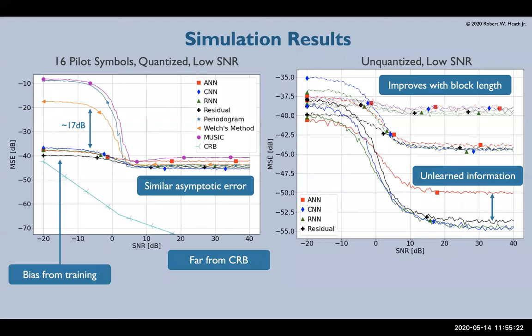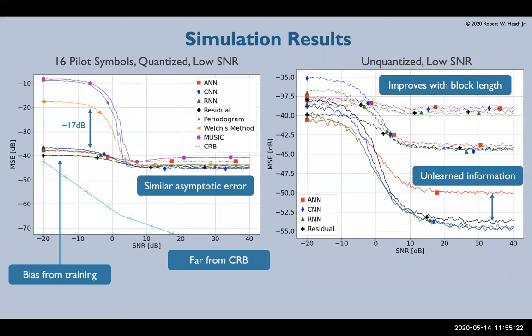Looking at estimation performance, we have two plots here. On the left, we have the results for training with low signal noise ratio and quantized data with a block length of 16. There are a few noteworthy points here. Specifically,